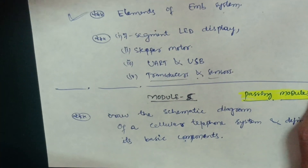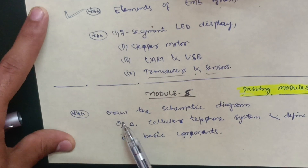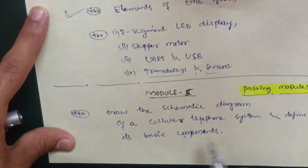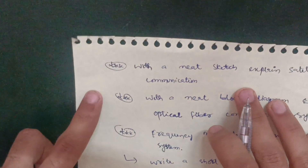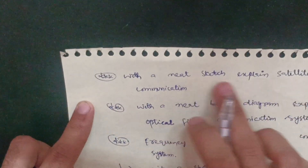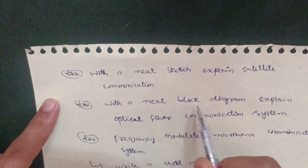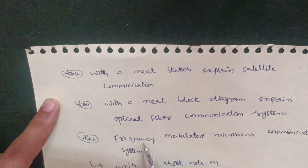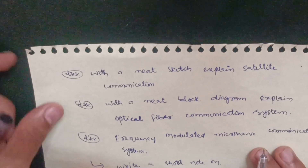Module 5 is also a passing module. The first important question here is to draw the systematic diagram of a cellular telephone system and define its basic components. Next, explain satellite communication with a neat sketch. Then, with a neat block diagram, explain the optical fiber communication system.